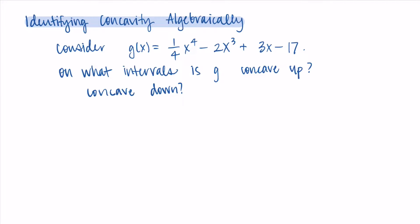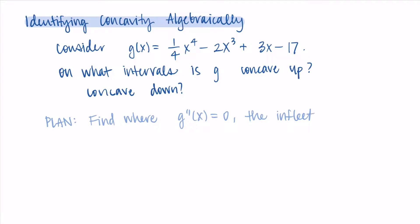The function is concave down when the second derivative is negative. This is similar to how a function is increasing when the first derivative is positive and decreasing when the first derivative is negative. We'll follow a very similar process to the first derivative test, but this time with the second derivative. Our first step is to find where the second derivative is equal to zero.